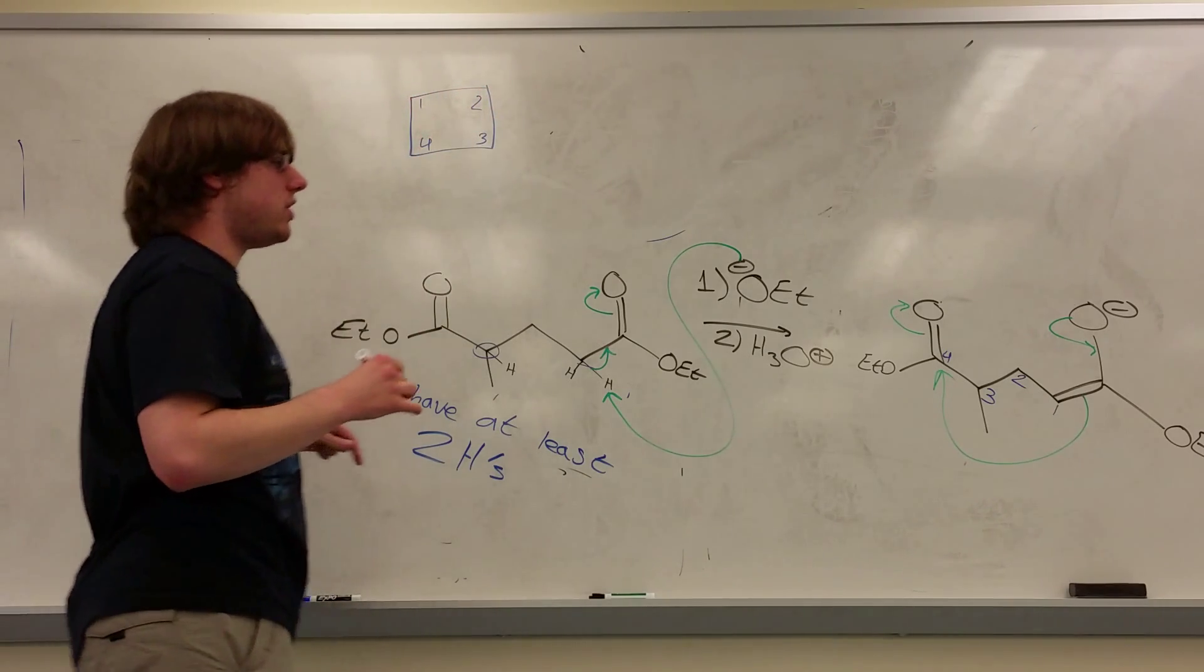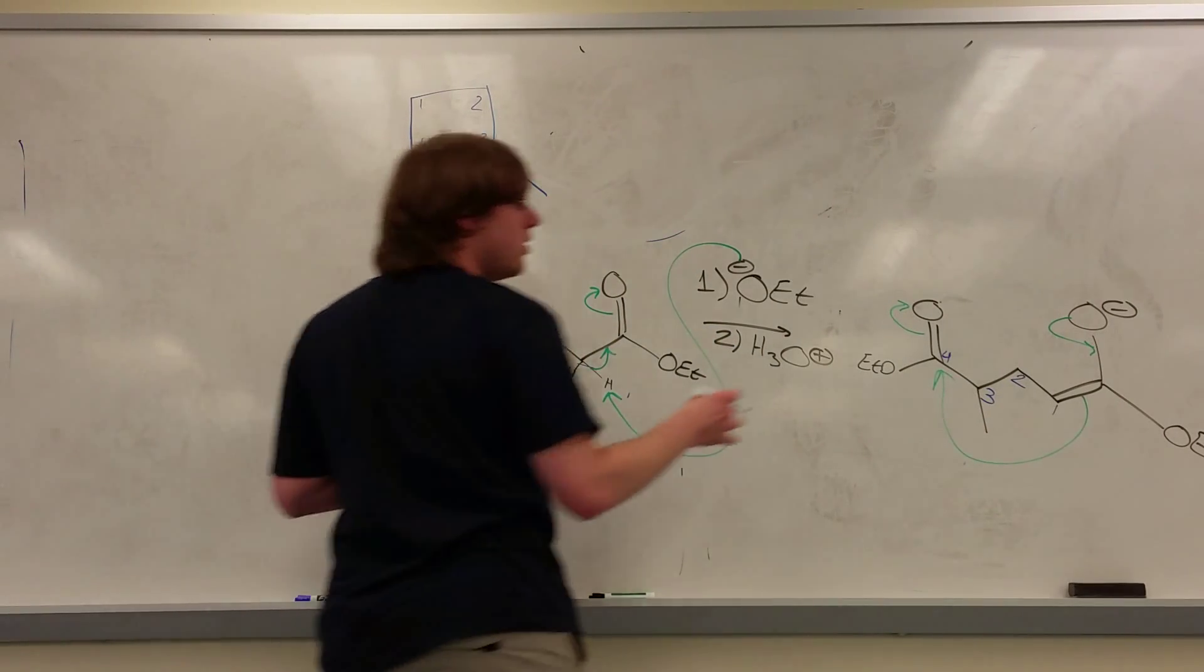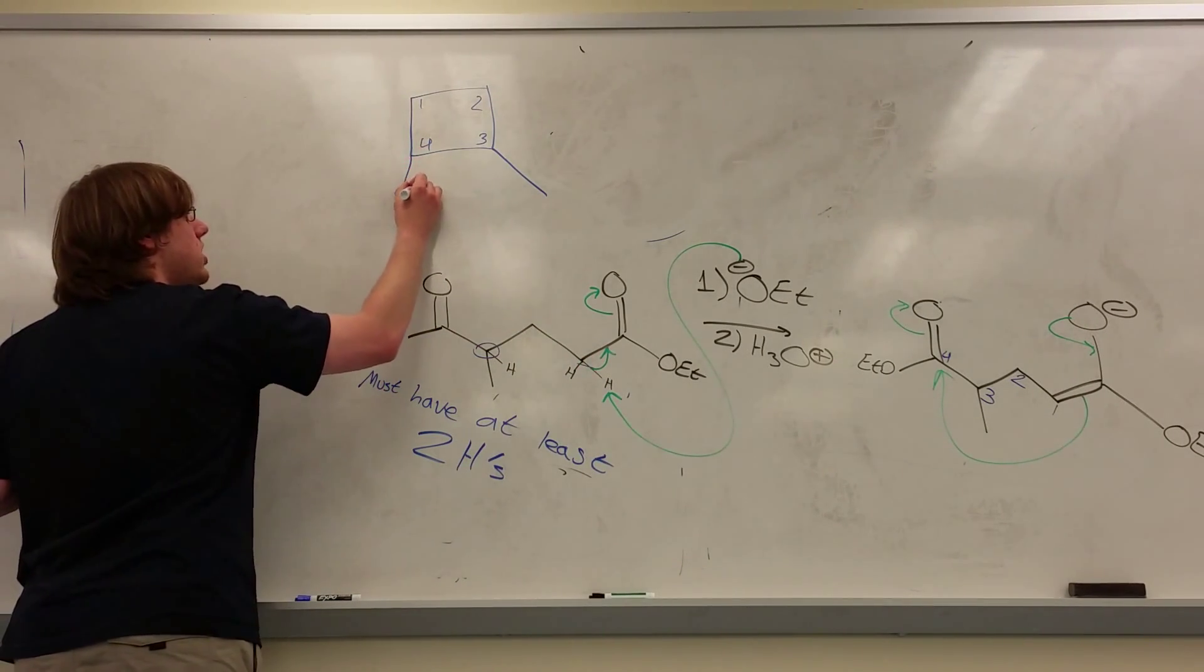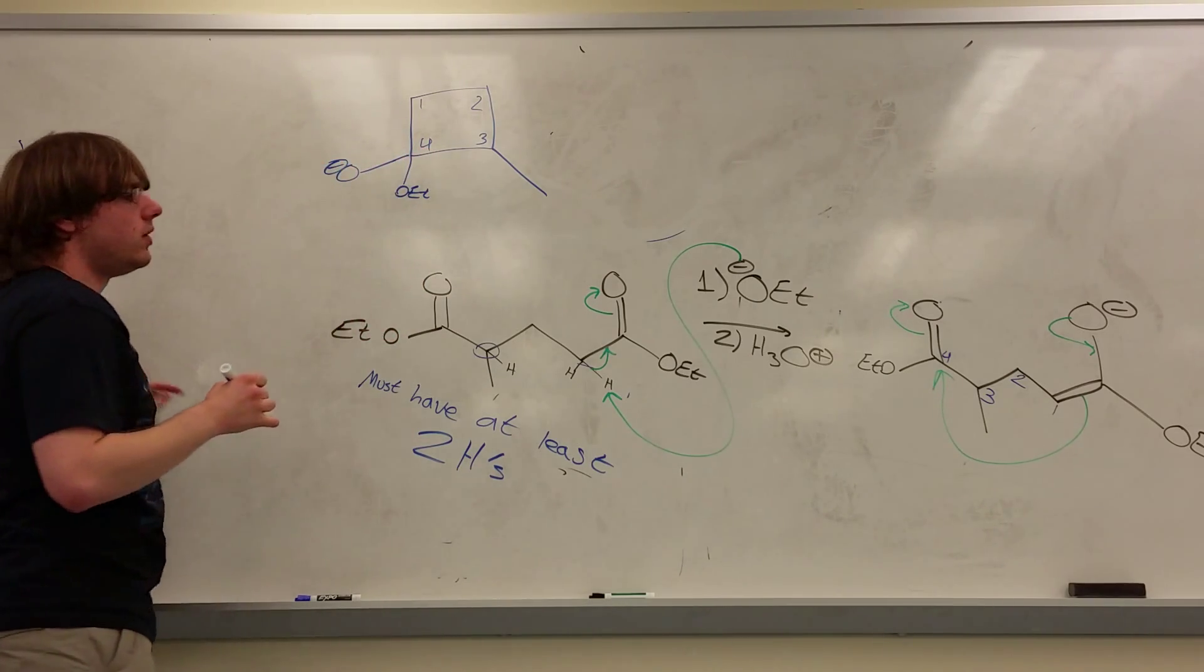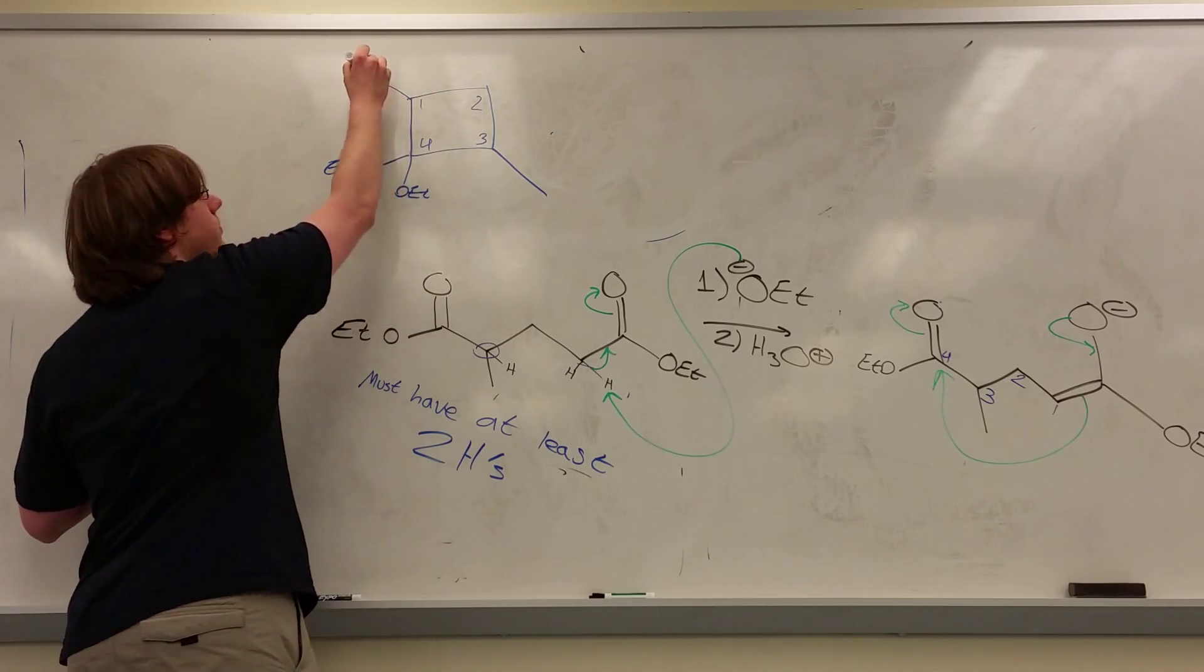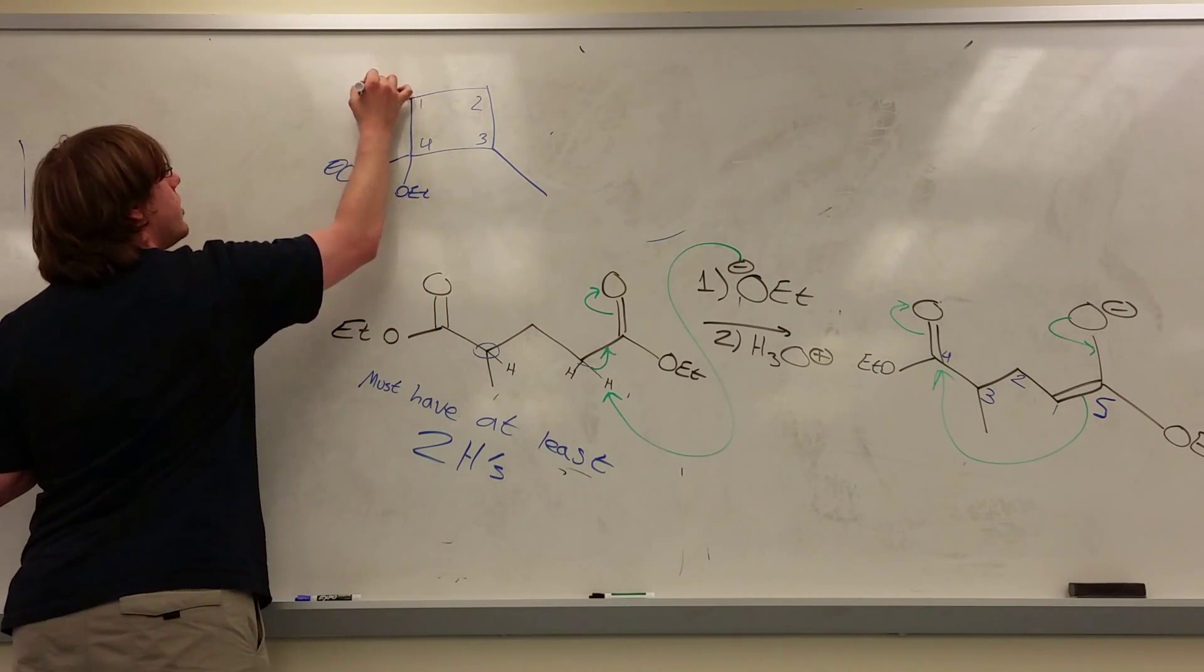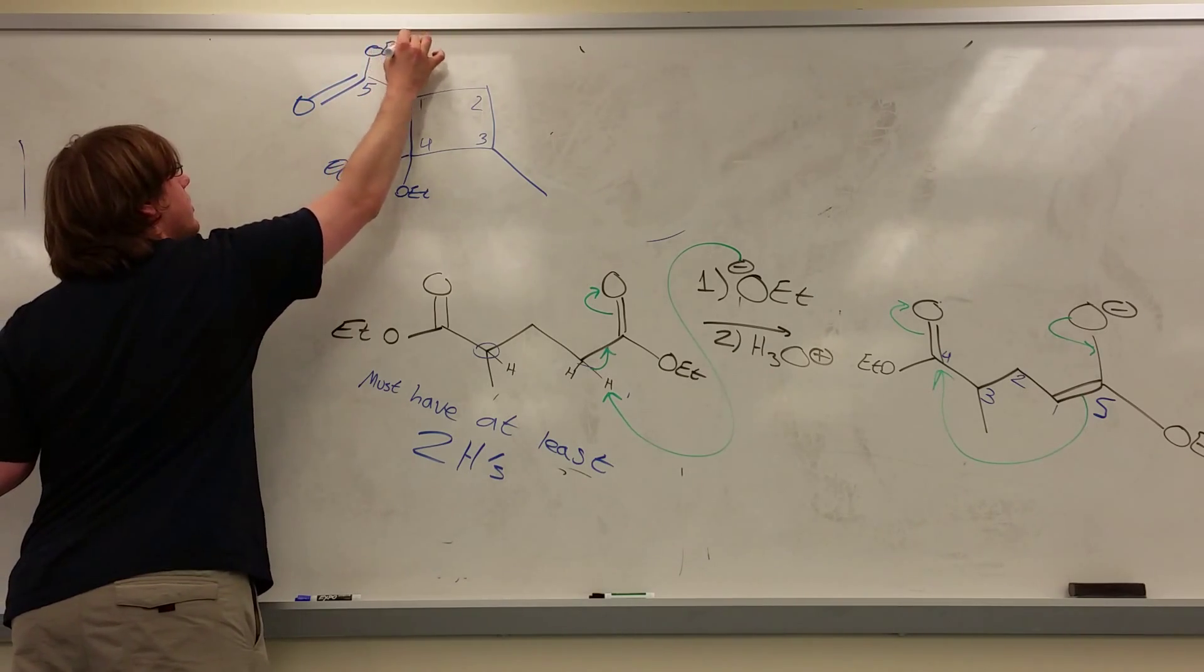Now I just have to connect the dots. Carbon 3 had a methyl on it. Carbon 4 was the carbon that got attacked, and it had the O, the double-bonded O, and the OET. The OET is unchanged for now, but the double-bonded O swung up, so now it's an O-.